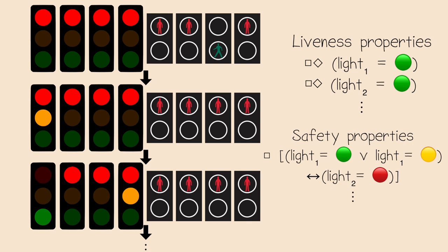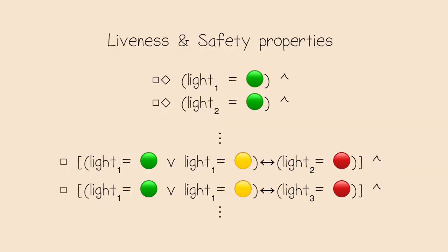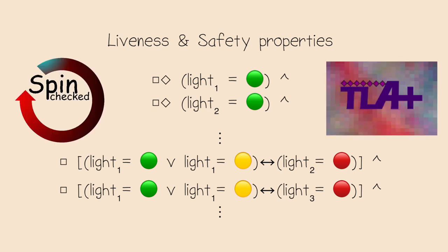We could implement more difficult properties using other temporal logics, like saying that light one must turn green within the next two minutes. Finally, you can add all these properties into one large property using conjunction and claim that every trace of an automata that fulfills these properties is a valid traffic light system. Given the code of a microcontroller that implements a traffic light system, we can check this property using a model checker like Spin or TLA+ for all possible traces of the system.